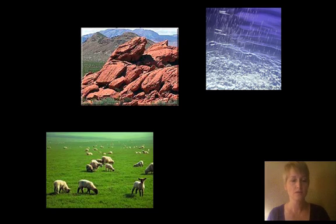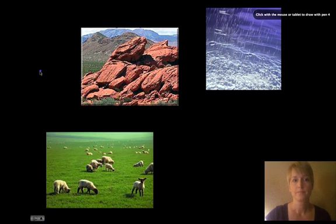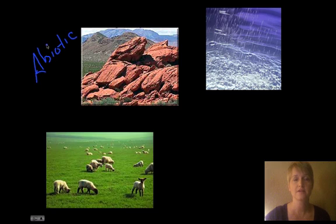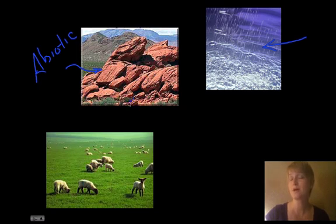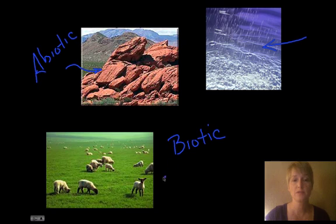I also want to talk about abiotic and biotic. Abiotic refers to the non-living things in the environment, so abiotic would be the rocks or the water, because water is a molecule — it's not alive. Biotic would be anything that's alive in that environment, so it would be the sheep, the grass, and the insects.